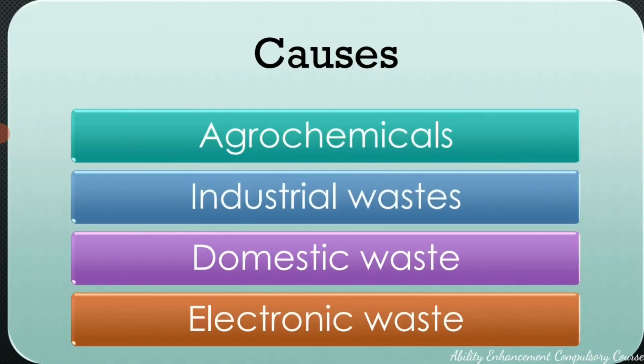Let us start with the causes of soil pollution. The major cause across the world is the use of agrochemicals — chemicals that we use in agriculture. This could mean insecticides, pesticides, fertilizers, fungicides, herbicides. All of these, when used in chemical form, get deposited in the soil over a long period of time and cause a major environmental disaster. They can even affect the health of people working in that field or staying nearby.